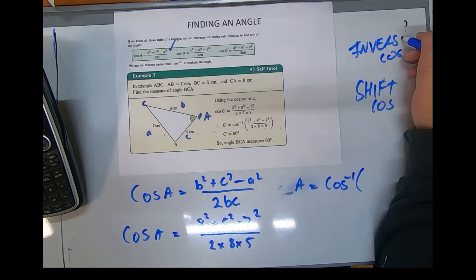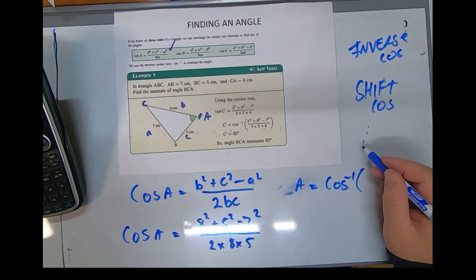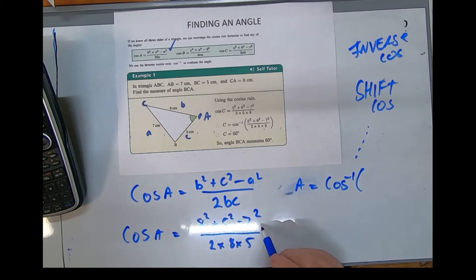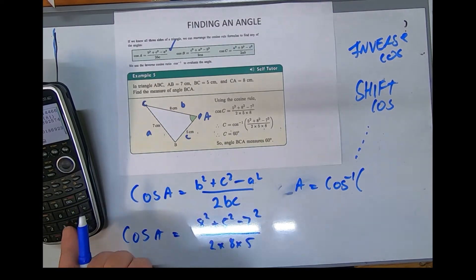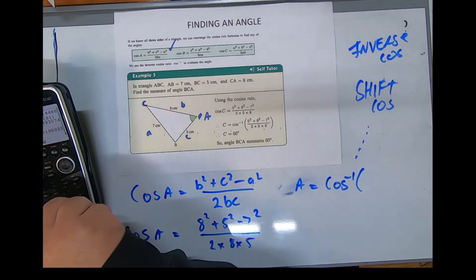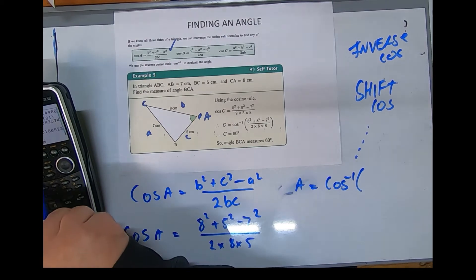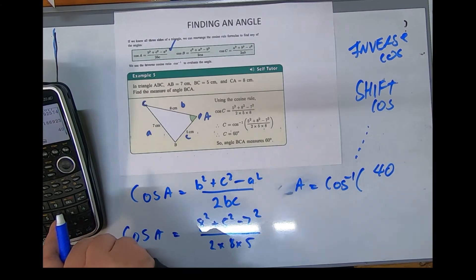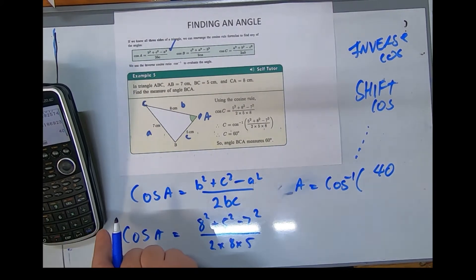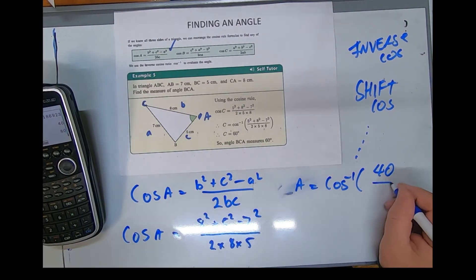That's what that symbol means there. I'd like to recap the top line and the bottom line separately. 8² plus 5² take 7² equals 40. The bottom is 2 times 8 times 5 equals 80.